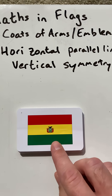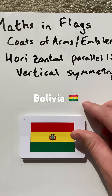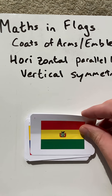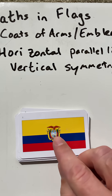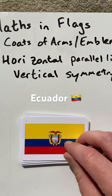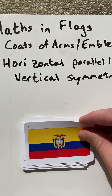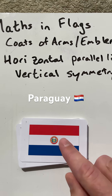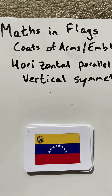Bolivia, because of the way that a bird is facing, no longer has a vertical line of symmetry. Ecuador similarly, because of the coat of arms, it'll no longer have vertical symmetry. Paraguay, the same — the words stop it from having a vertical line of symmetry.